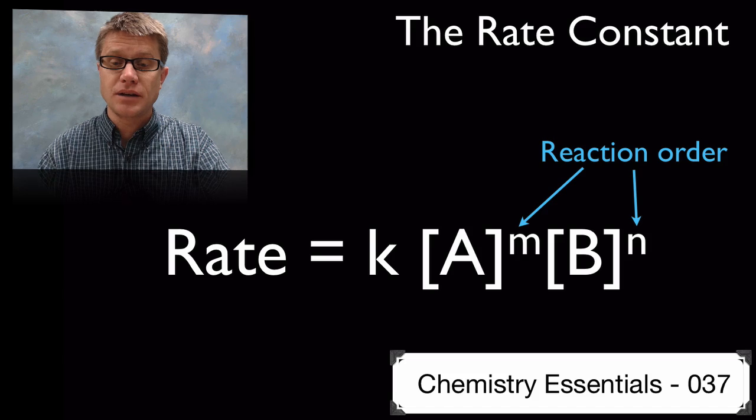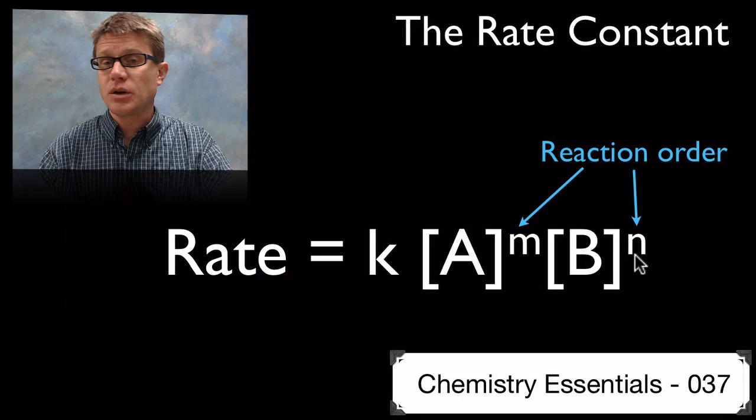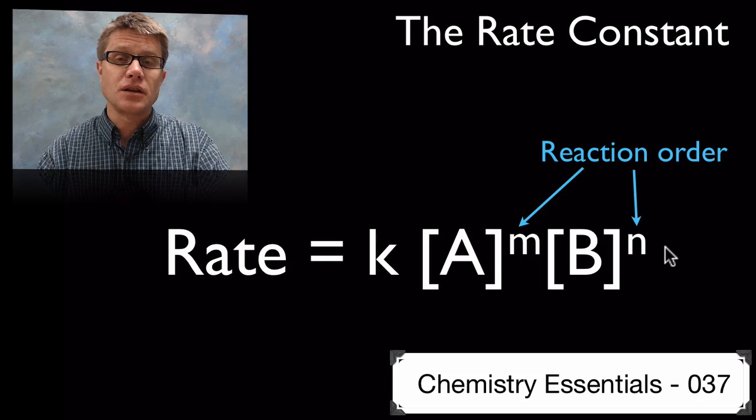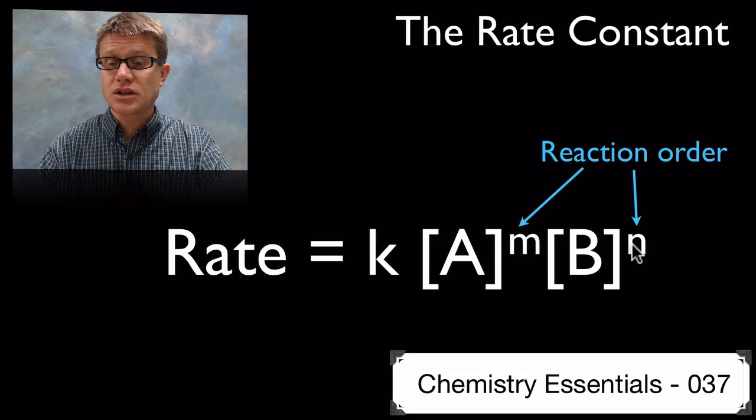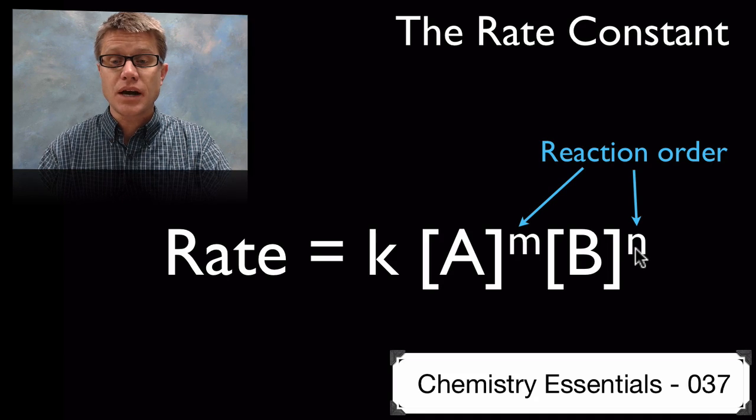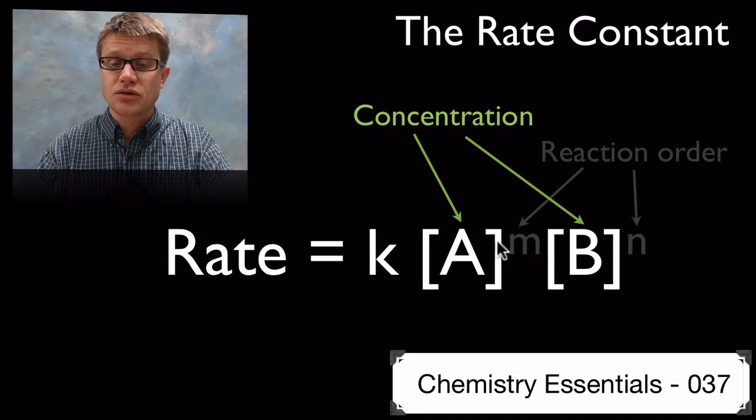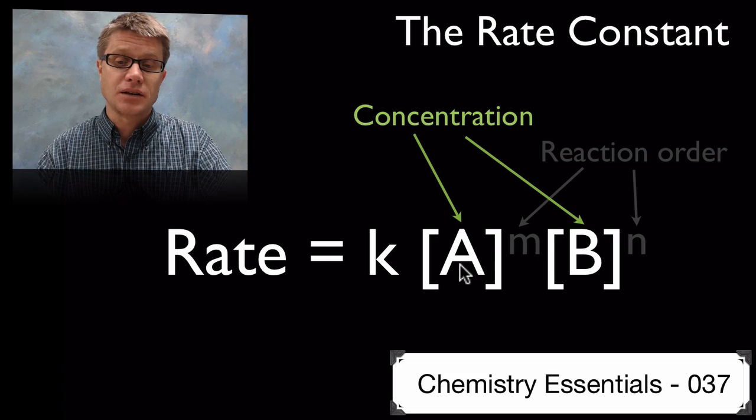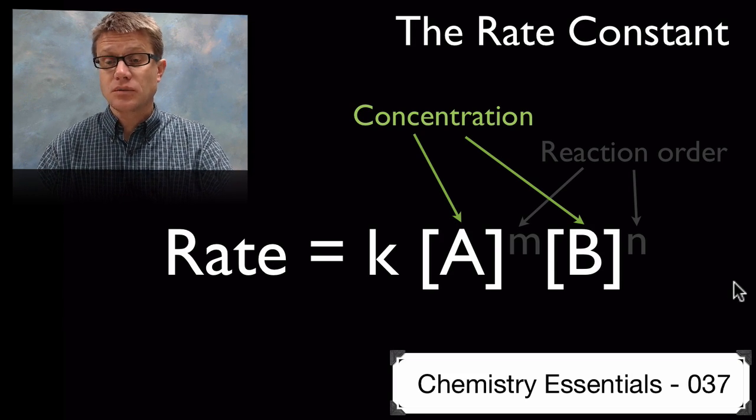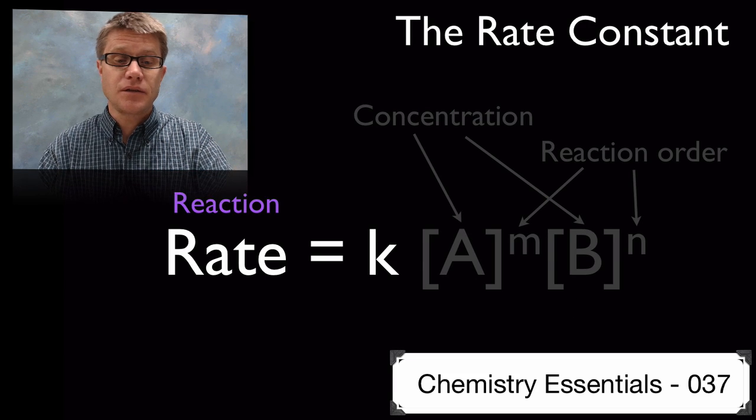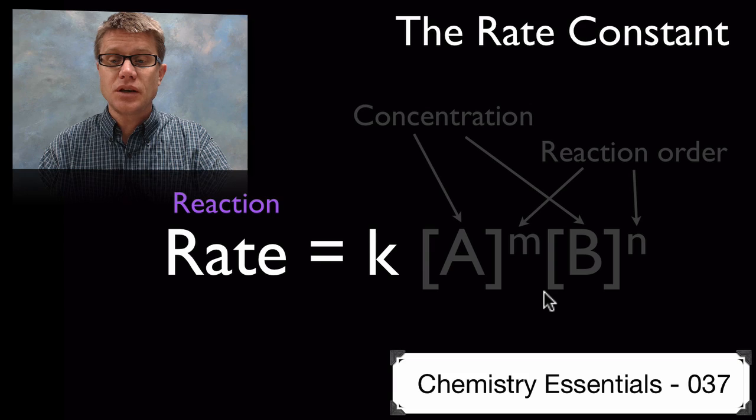But here's our rate law right here. So in our rate law the m and the n, and there can be more exponents than that, is going to tell us the reaction order. In other words, is A proceeding at a second order reaction and B at a zero order reaction? So that's going to be in the exponent. In here we're going to get the concentration. So this would be the concentration of reactant A and B. But remember if we have a really big reaction we could have more of these reactants. And then finally we have reaction rate which is going to be how fast this reaction is proceeding.